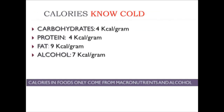This is a concept that needs to be known cold — memorize these values so you can do calculations efficiently. One gram of carbohydrate equals four kilocalories. One gram of protein equals four kilocalories. One gram of fat equals nine kilocalories. One gram of alcohol equals seven kilocalories. Calories only come from the macronutrients and from alcohol.